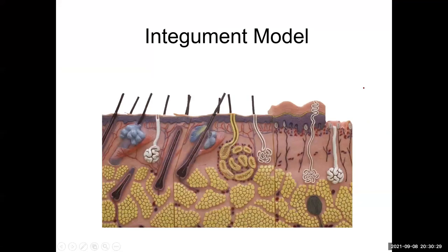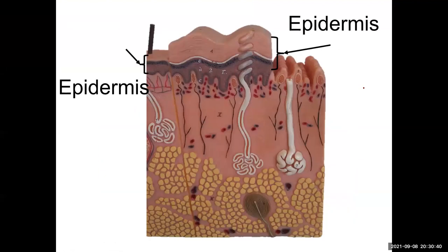Now let's go through the lab atlas slides. This model is showing us the epidermis with two variations of thickness. On the left of the screen we can see thin skin — it's a thinner epidermis, and you can see a little hair there. On the right, in the center of the screen, is thick skin. Look at the huge difference in the stratum corneum between the two. We also see this white or yellow line here, which represents the one layer present in thick skin but not in thin skin.